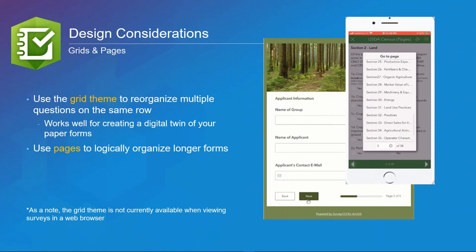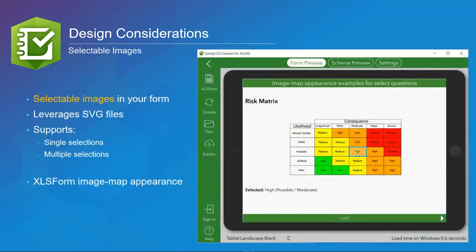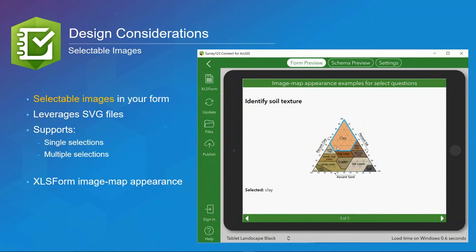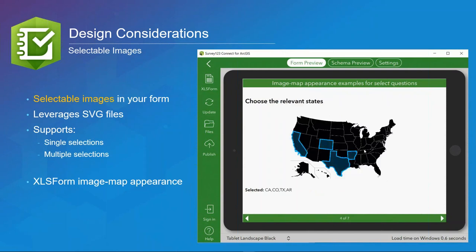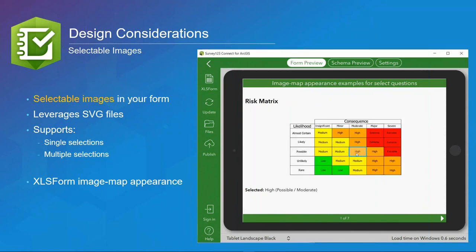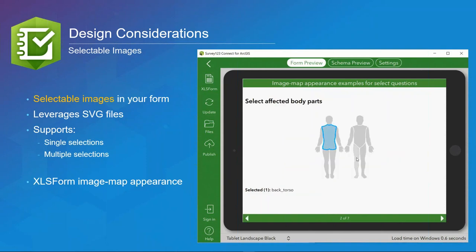Scalable Vector Graphics (SVGs) are two-dimensional XML-based vector graphics that allow you to select a particular area of an image to return a string based on the ID of the vector path. You can leverage SVGs to make your forms nearly error-proof. Furthermore, with selectable graphics you can do creative things like watermark a photo with the name of the item being selected or create relevant fields based on that selection.